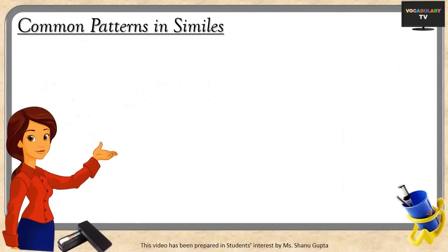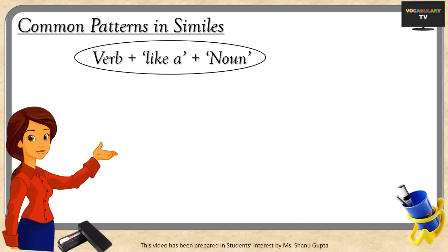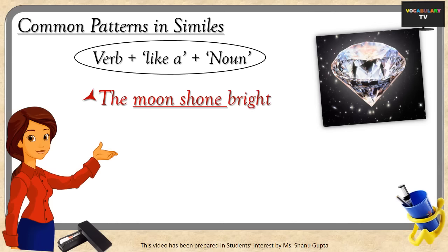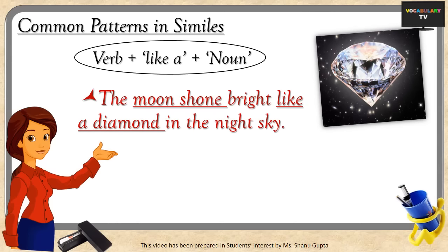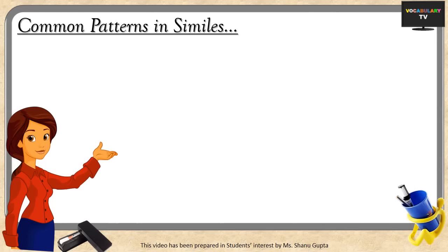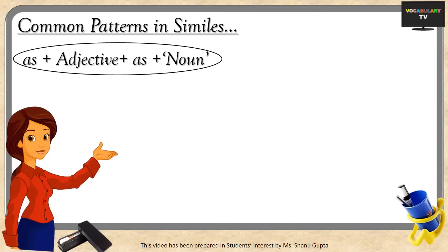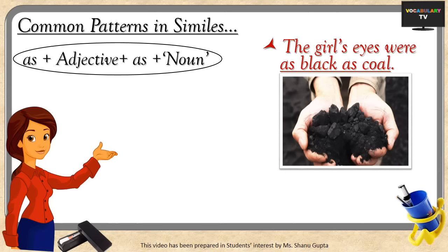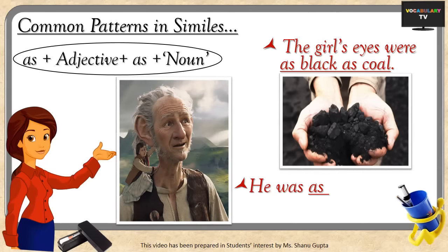There are two common patterns that similes follow. The first pattern is: verb + like + a + noun. For example, 'the moon shone bright like a diamond in the night sky' — comparing the moon and the diamond on the verb shine — and 'he eats like a pig.' The second pattern is: as + adjective + as + noun. For example, 'the girl's eyes were as black as coal,' comparing her eyes to coal on the quality black. Another example is 'he was as big as a giant.'